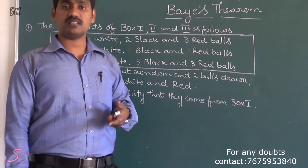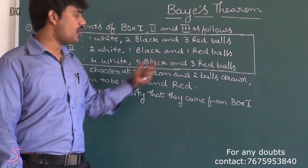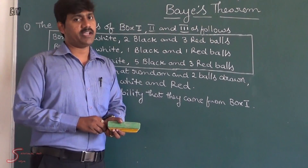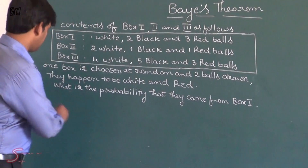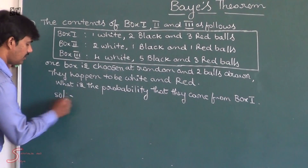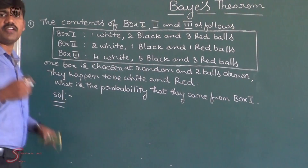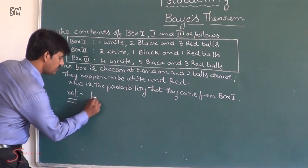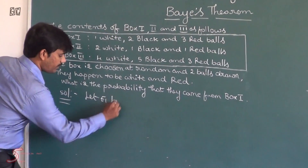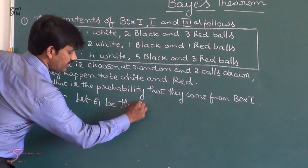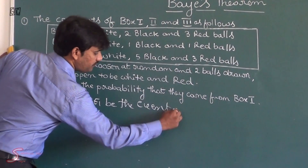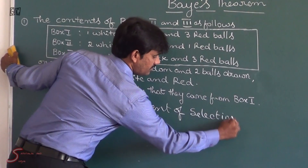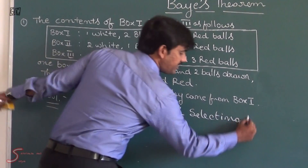Bayes' theorem is one of the answers of conditional probability. We have all the conditions here. Now I am going to solve this problem by using Bayes' theorem. First of all we have to define the events for this probability. Let E1 be the event of selecting box 1.